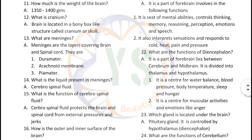What is the weight of the brain? Approximately 1350 grams to 1400 grams. What is cranium? The brain is located in a bony box-like structure called cranium or skull. What are meninges? Meninges are the layers covering the brain and spinal cord. They are duramater, arachnoid membrane and piamater.